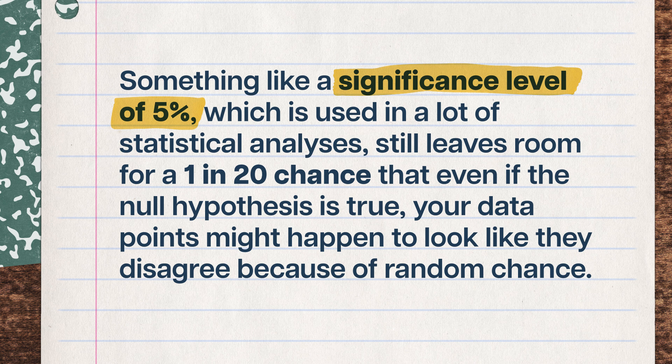This is where we run into the pitfall of hypothesis testing. It can't tell you what is definitely true, only what the data do or don't give evidence for. Setting a significance threshold and calculating a p-value from a statistical test isn't airtight. A significance level of 5% still leaves room for a 1-in-20 chance that even if the null hypothesis is true, your data might happen to look like they disagree due to random chance. Setting the threshold at a single point can feel a little arbitrary — a p-value of 4.9% basically indicates the same agreement as a p-value of 5.1%, even though one falls below 5% and the other above it. Some researchers think that getting rid of significance thresholds and dealing with uncertainty head-on is perfectly fine.